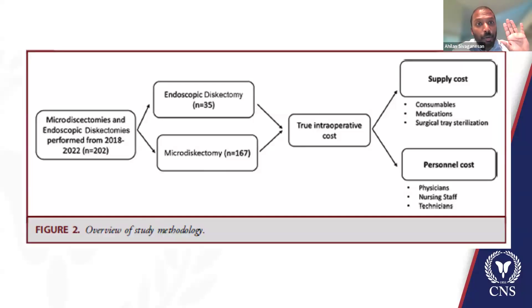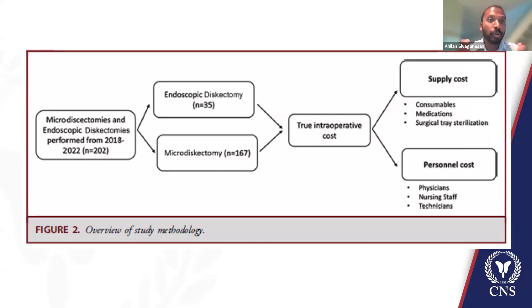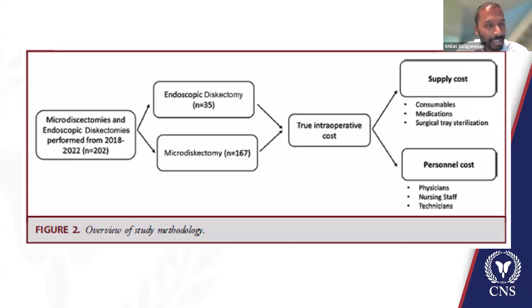We're not taking into account the upfront cost of buying the endoscopic tower or the microscope. It's like: tomorrow you want to do a discectomy, you have availability for both options — what is the cost difference at that point of decision making?